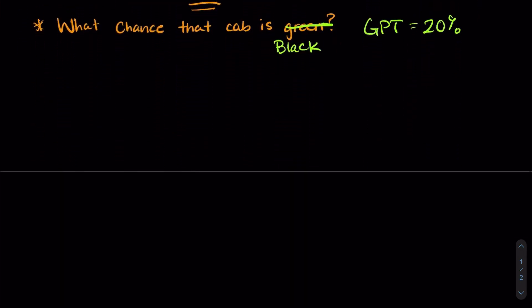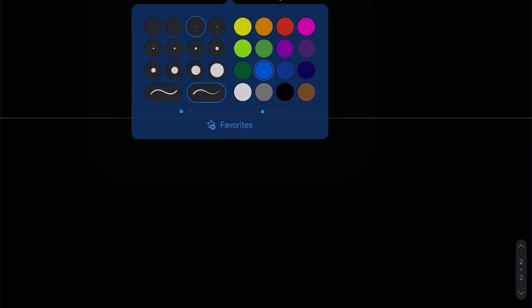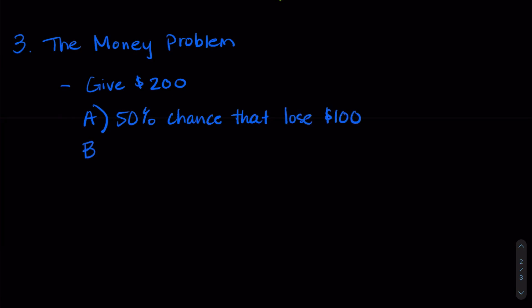All right, our last problem. I'm going to dub this the money problem, it's not the actual name and there are lots of different versions of this, but this is basically a loss aversion bias problem. So people don't want to lose money. In this case I'm going to give you $200 and you need to make a decision. Do you want to A) have a 50% chance that you lose $100, or would you rather have a 100% chance that you lose $50?